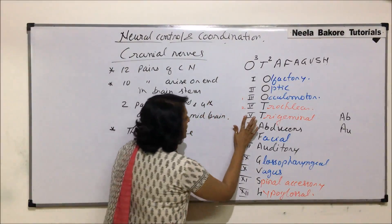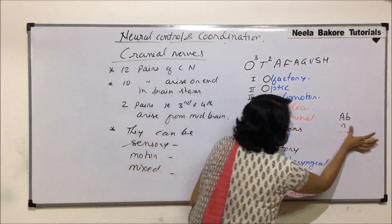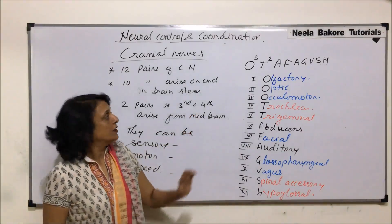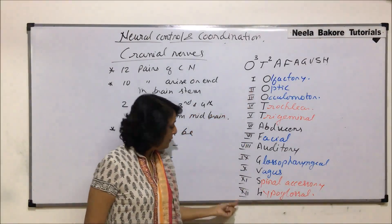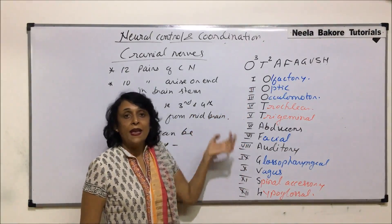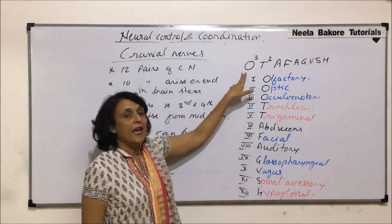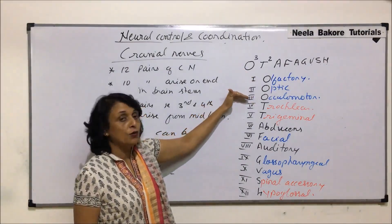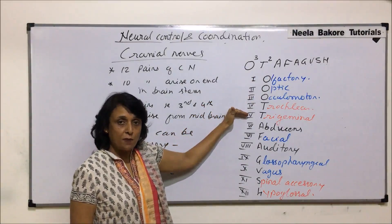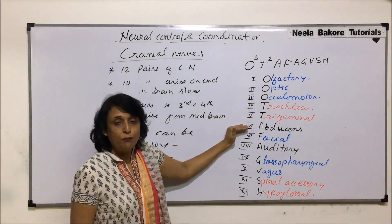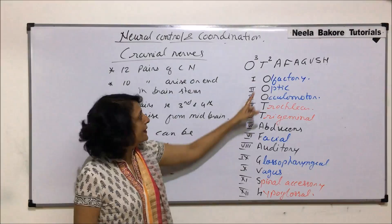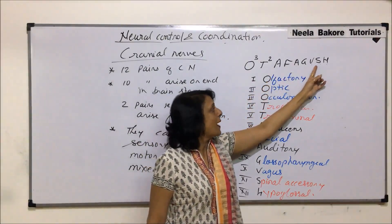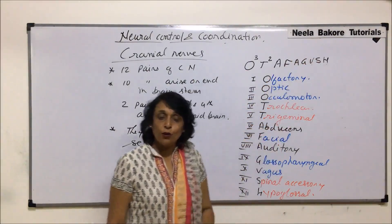So now let us erase all the clues. To recap: 12 pairs of cranial nerves from 1 to 12. Using the formula: first is olfactory, then optic, oculomotor, trochlear, trigeminal, then abducens, facial, auditory, and then glossopharyngeal, vagus, spinal accessory, and hypoglossal.